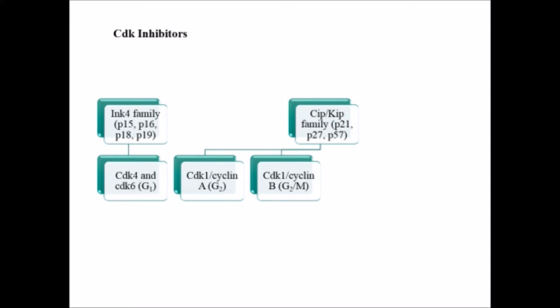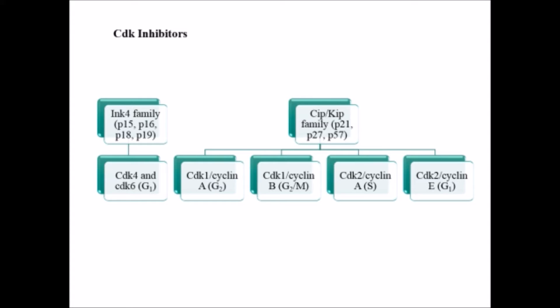The CDK inhibitor targets include: CDK1 and cyclin B, which leads to arrest at the G2-to-M phase; CDK2 and cyclin A, which leads to arrest at S phase; and CDK2 and cyclin E, which arrests at the G1 phase.